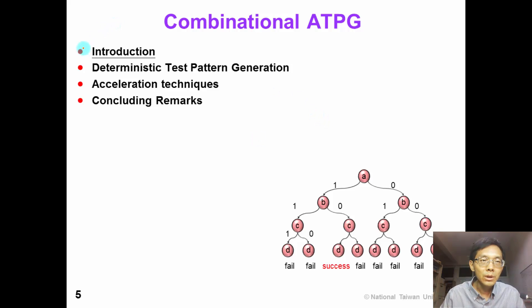In this chapter we will give an introduction about test generation. Then we will go into details of many different deterministic test pattern generation techniques. Because ATPG is a very slow process, so we need acceleration techniques to speed up the process. Finally, we will conclude this chapter.